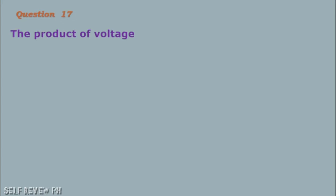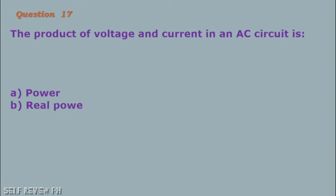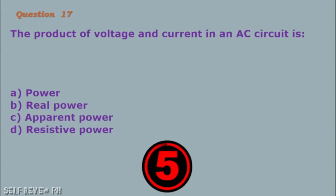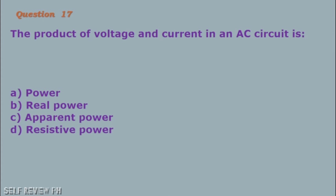Question number 17: The product of voltage and current in an AC circuit is: A. Power B. Real power C. Apparent power D. Resistive power. The correct answer is letter C, apparent power.